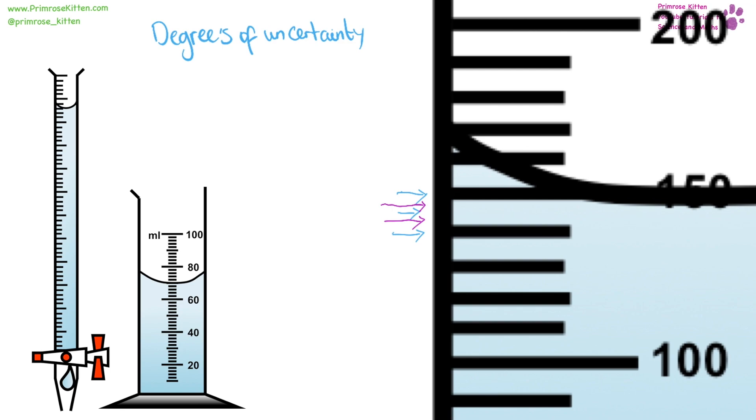When we are working out concentration, that is going to be your amount divided by your volume. Concentration is measured in moles per decimetre cubed. Amount is in moles and your volume is in decimetre cubed.